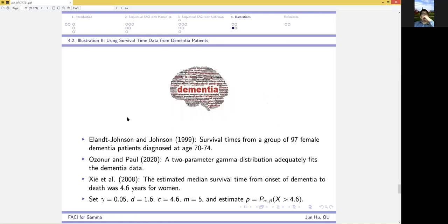we collect the final sample data listed here so that we construct the confidence interval for p given here. In the second illustration we use survival time data from dementia patients. A two parameter gamma distribution adequately fits the dementia data. And we are interested in estimating the probability that the survival time is greater than 4.6 years.